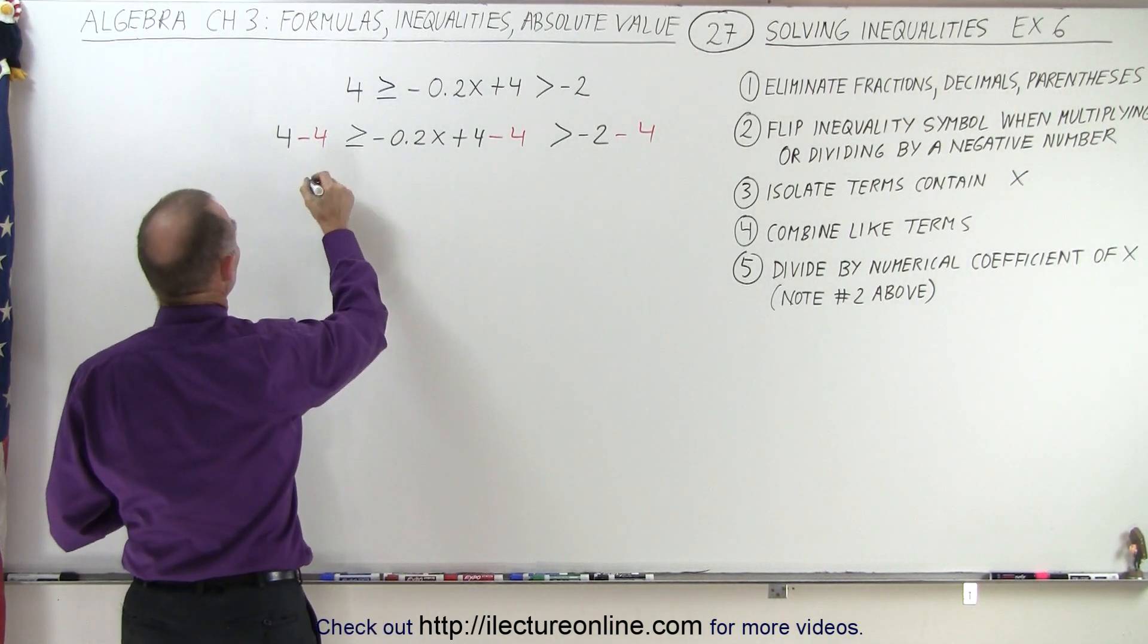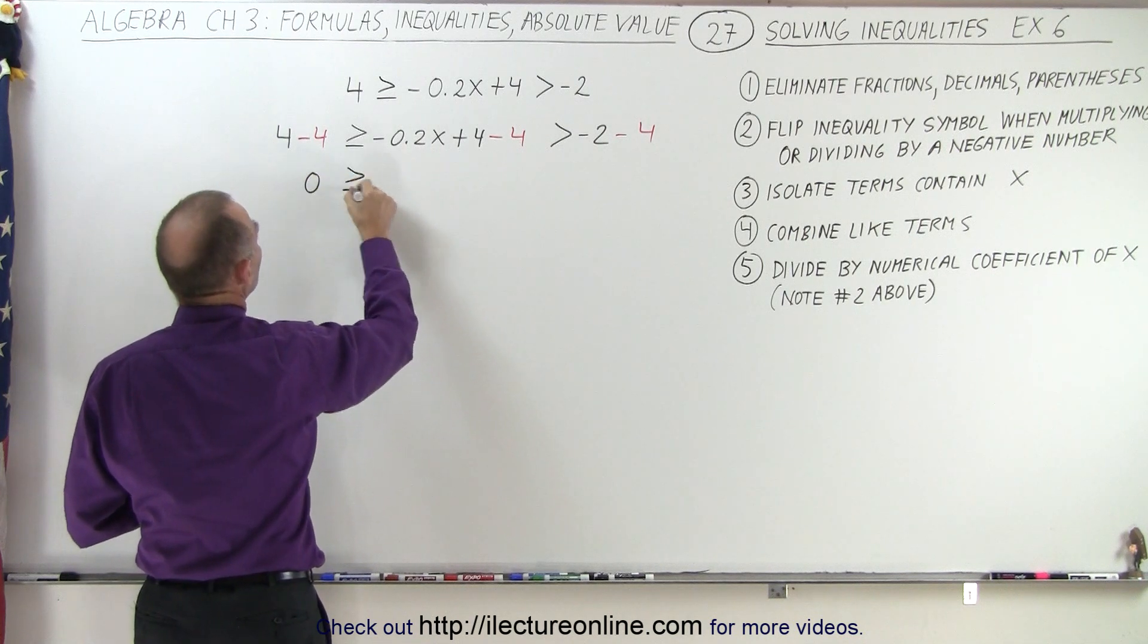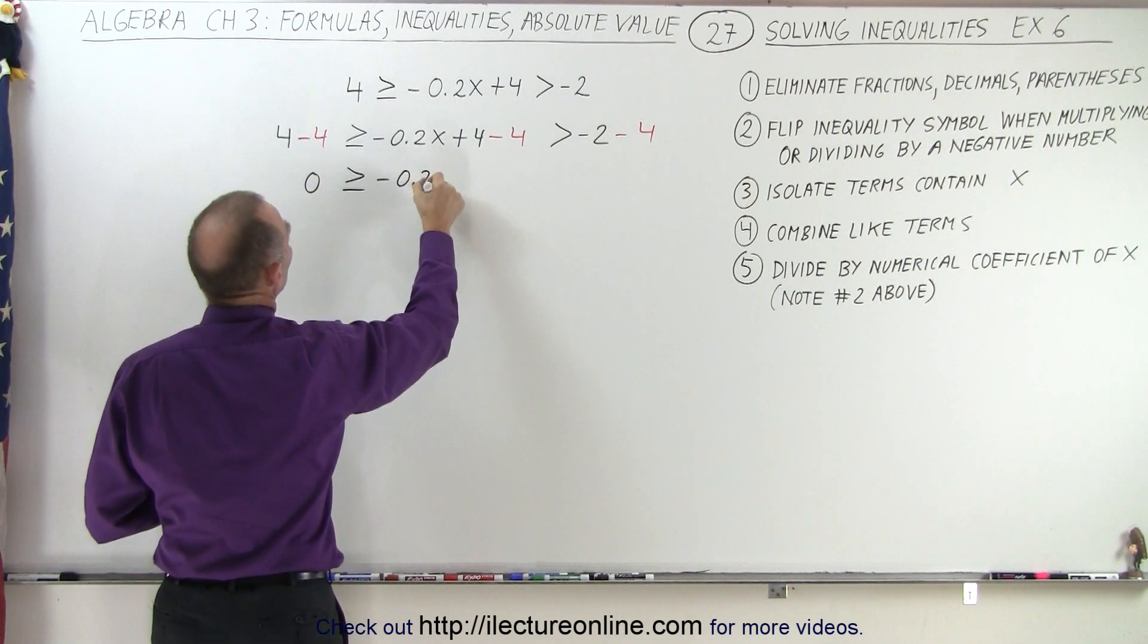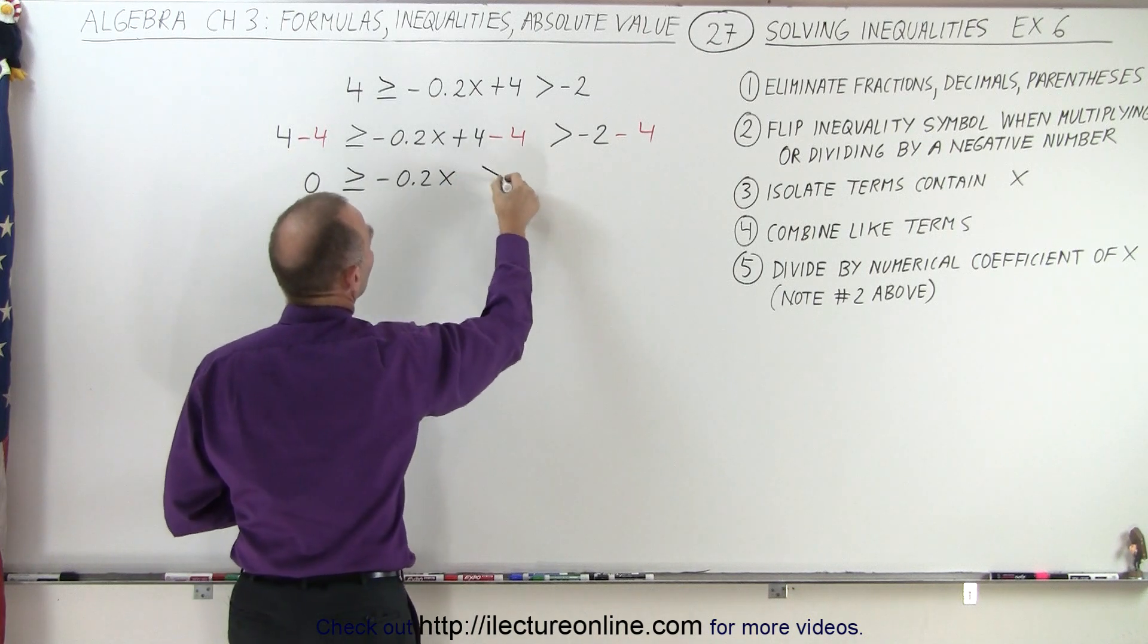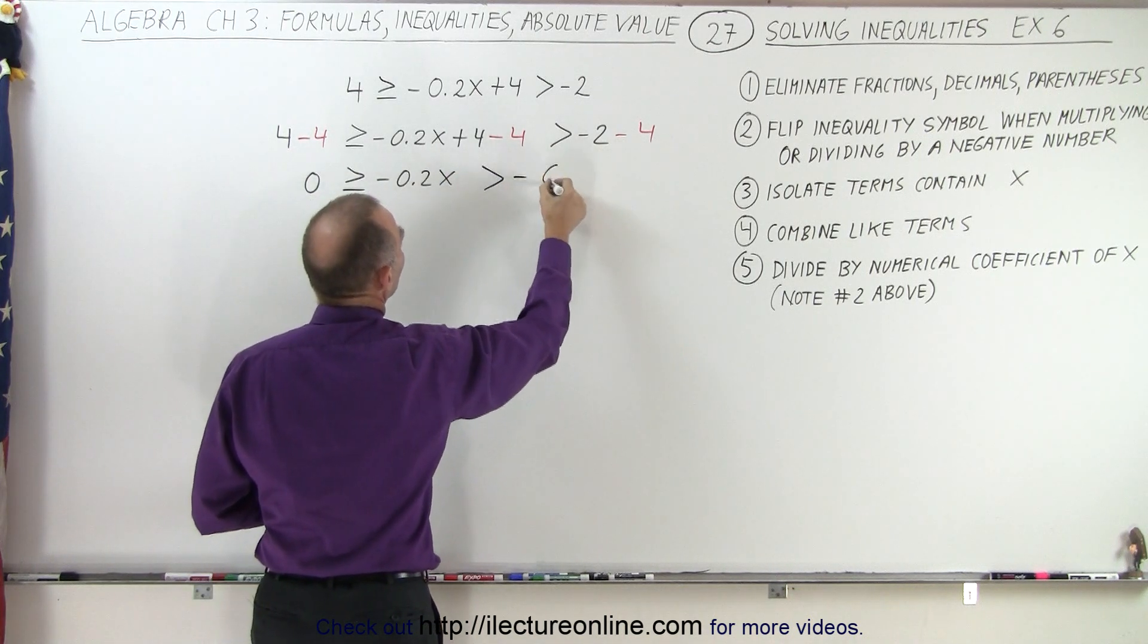Now we can see that we end up with 0 greater than or equal to negative 0.2x. The 4s cancel out. Greater than negative 2 minus 4, which is negative 6.